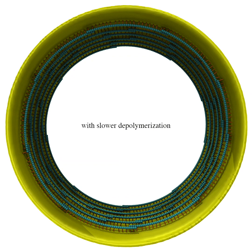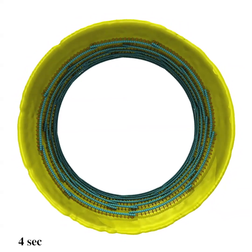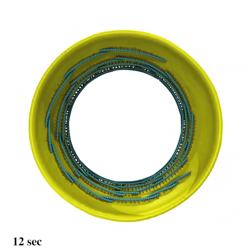We then slow down the filament depolymerization. With these adjustments, ring integrity is preserved, allowing deep constriction to occur.